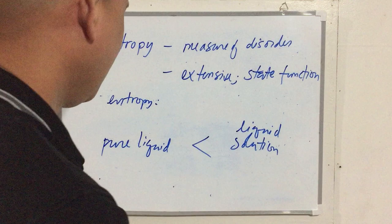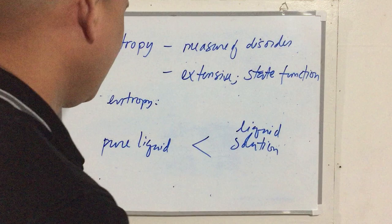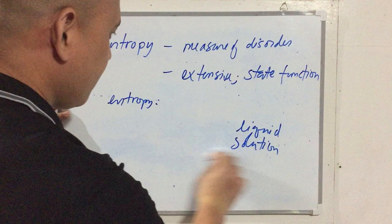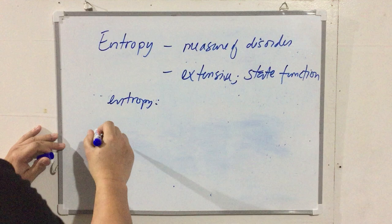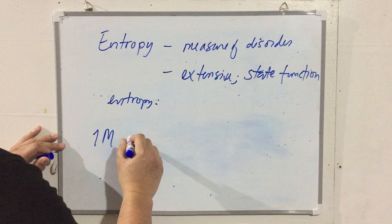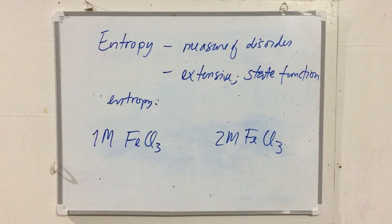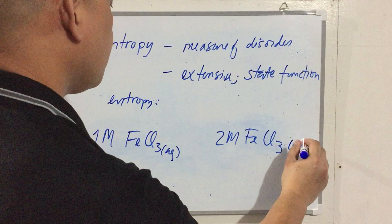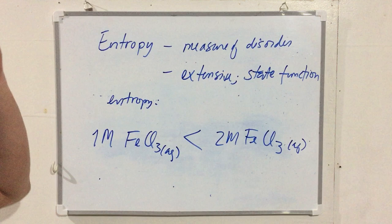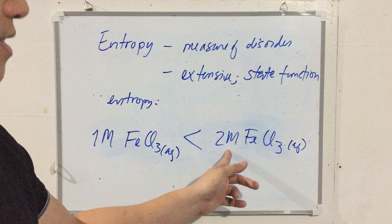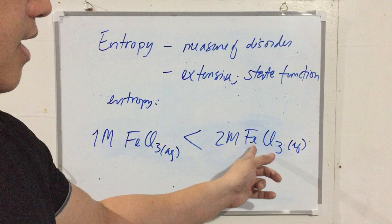If we compare one molar versus two molar ferric chloride aqueous solutions, the two molar solution has higher entropy. Since entropy is extensive, the more material — in this case more solute particles of ferric chloride — the higher the entropy.